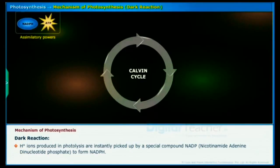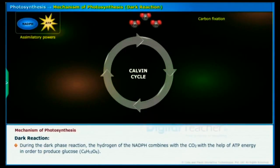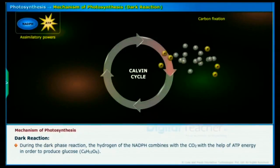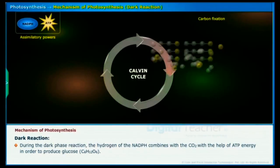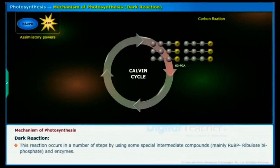Hydrogen ions produced in photolysis are instantly picked up by a special compound NADP to form NADPH. During the dark phase reaction, the hydrogen of the NADPH combines with the CO2 with the help of ATP energy in order to produce glucose.